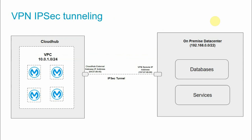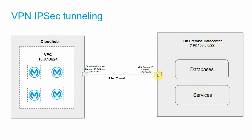Here is how the IPSec VPN tunneling looks. I have created a VPC with CIDR block 10.0.1.0/24. I have an on-premise data center with CIDR block 192.168.0.0/22 which contains a database and some backend services. I have deployed applications in CloudHub within the VPC, and I want to access those databases and services. To do that, I set up a VPN between CloudHub and the on-premise data center.